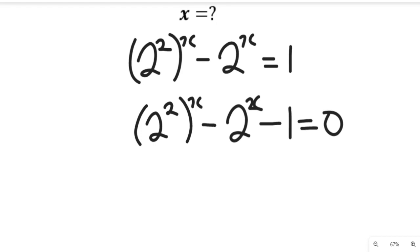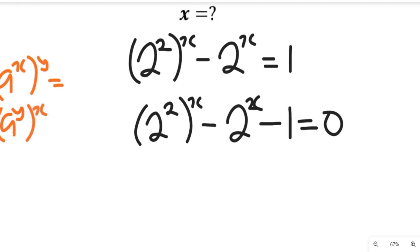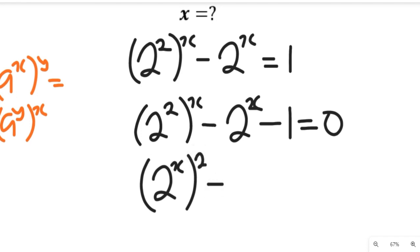Remember the law of indices: when we have a to the power of x multiplied by y, this can equal a to the power of y multiplied by x. Applying that here, this becomes 2 to the power of 2x minus 2 to the power of x minus 1, equal to 0.